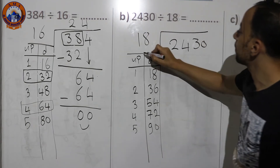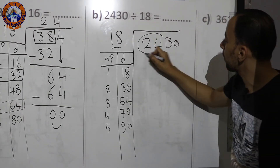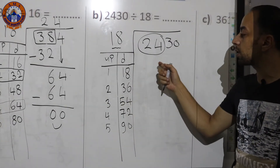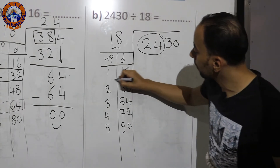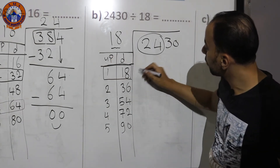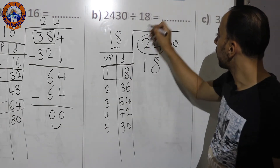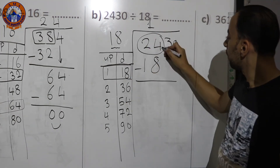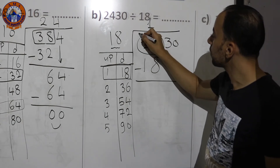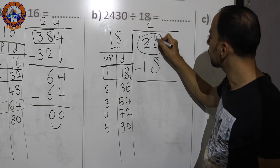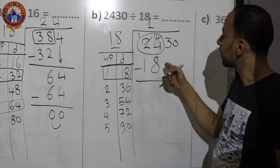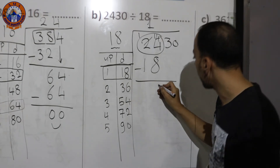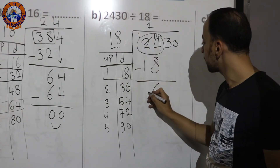Since we have a two-digit divisor, take two digits from inside: 24. The nearest number to 24 or smaller is 18. Put 18 down and 1 up. Subtract: 4−8 can't be, so borrow — 14−8=6, then 1−1=0.